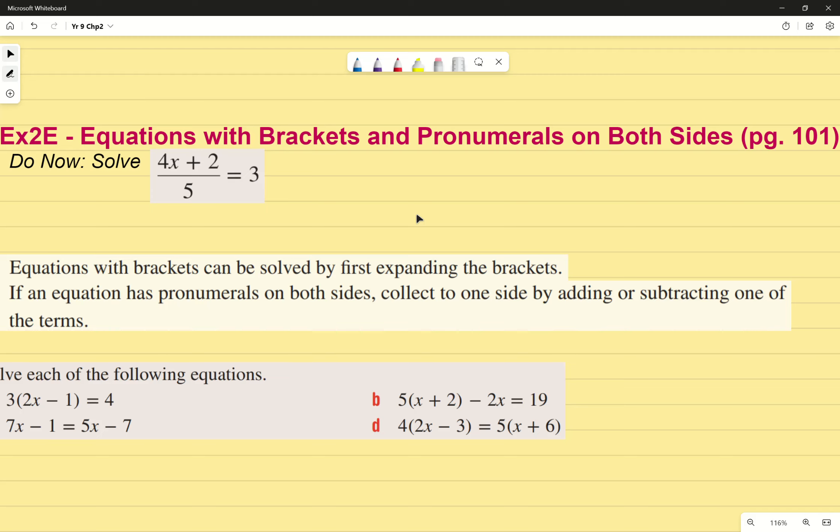The introduction to exercise 2E on equations with brackets and pronumerals on both sides, page 101 of your textbook. We're looking at this do now question from exercise 2D. I picked a particularly tricky one. It's tricky because there are multiple things you need to get rid of, but the question is in what order do we get rid of them?